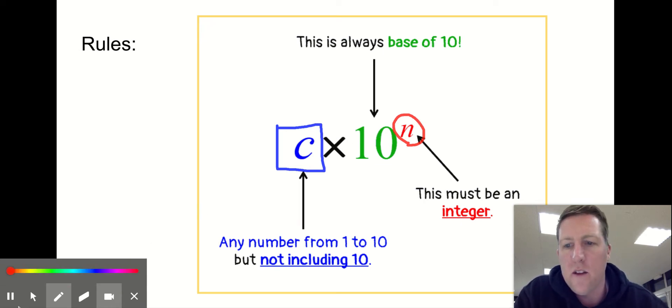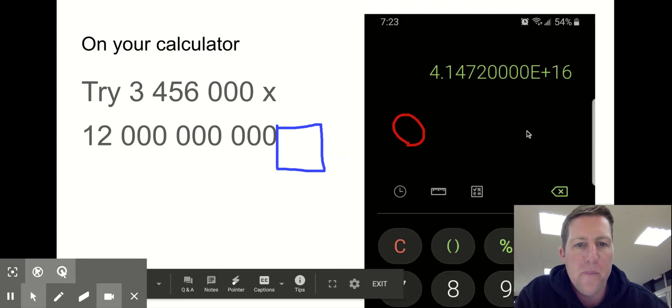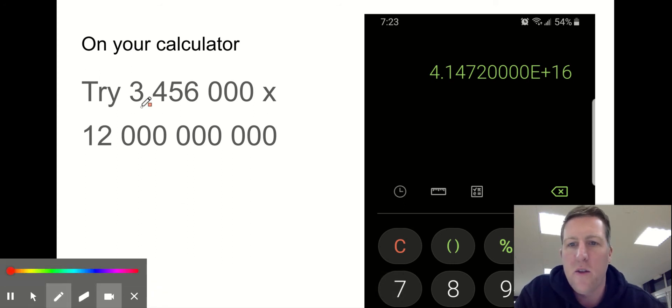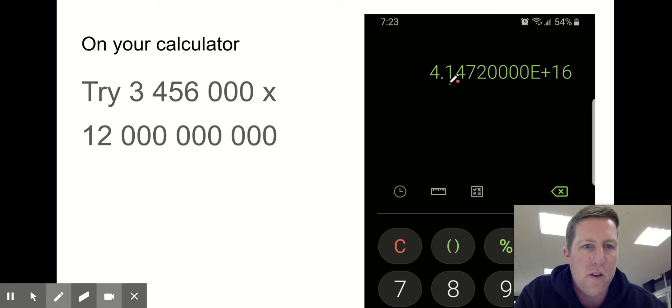And you might have seen this in your calculator before. If you type this in on your calculator, 3,456,000 multiplied by 12 billion, you're going to get this. So I just did this on my phone.